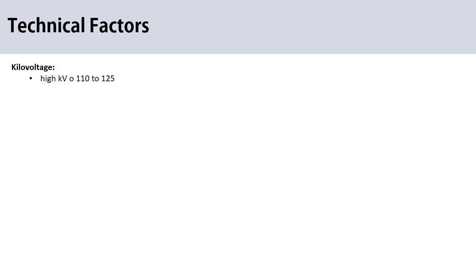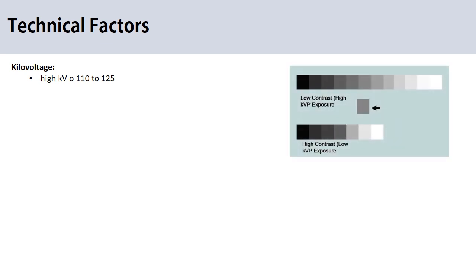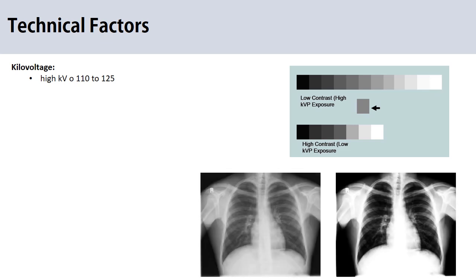Now let's talk about technical factors — kilovoltage and milliampere-seconds. In the chest region we have different parts with different opacities: we have bone, soft tissue like the heart, and lung which is filled with air. Sufficient contrast is required to demonstrate the many shades of gray, so a high kilovoltage is needed — usually 100 to 120 kVp for a normal adult patient. Lower kilovoltage results in high contrast, which we don't want, as we cannot visualize the lung markings especially in areas behind the heart and lung bases. As a general rule, high kilovoltage over 100 kVp requires the use of a grid and bucky.